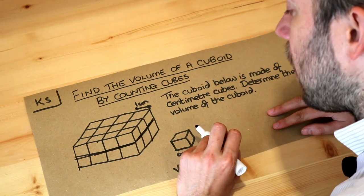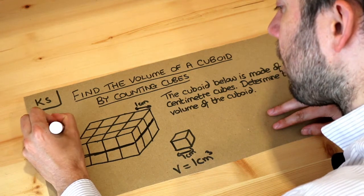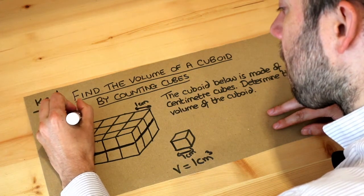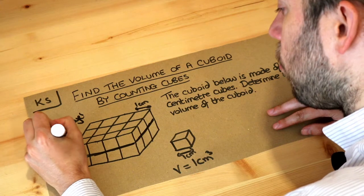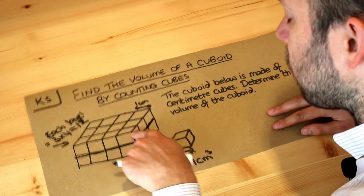Now 4 times 3 is 12, so each layer of cubes is 3 times 4, which is 12 cubes. We can actually count them: 1, 2, 3, 4, 5, 6, 7, 8, 9, 10, 11, 12.